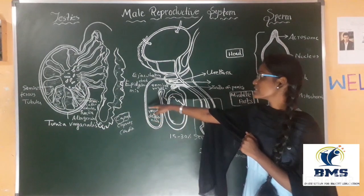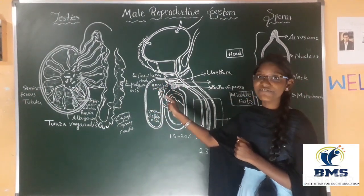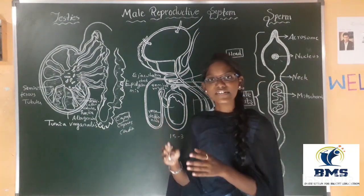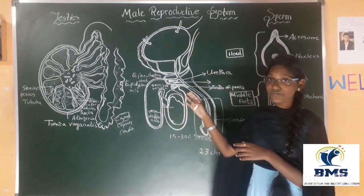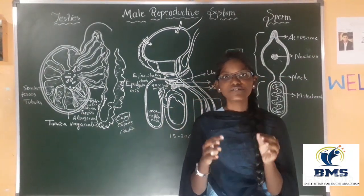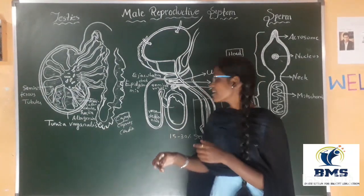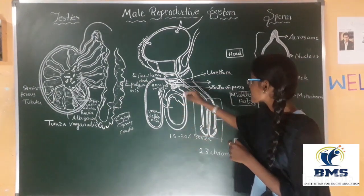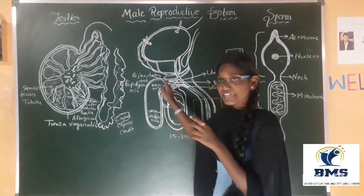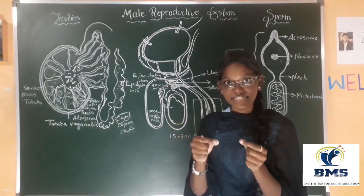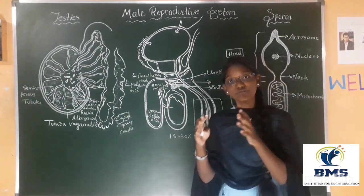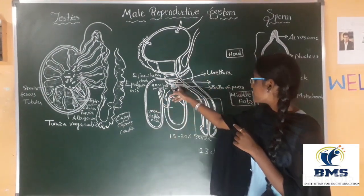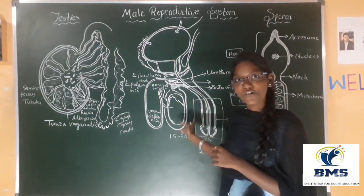The sperm enters the ejaculatory duct by mixing with the seminal fluid. Then coming to the prostate gland, which gives 15 to 30% of semen to the sperm. It gives energy, nutrition, and activates the spermatozoa. They both combine and enter through the urethra. During ejaculation, the bulbourethral glands release some fluid which is useful. The semen travels through the urethra and goes out of the body through the penis.